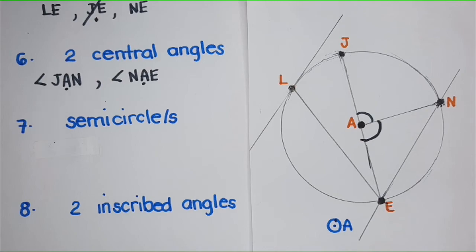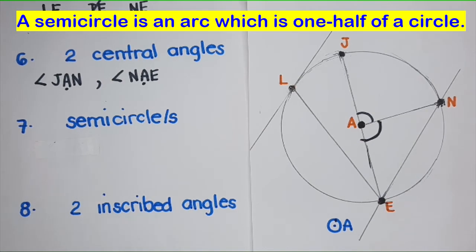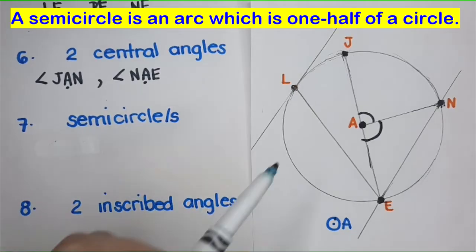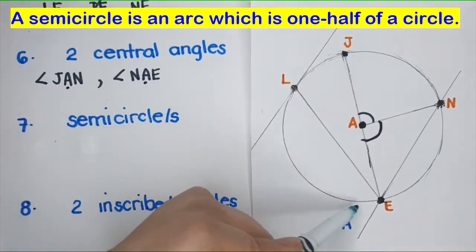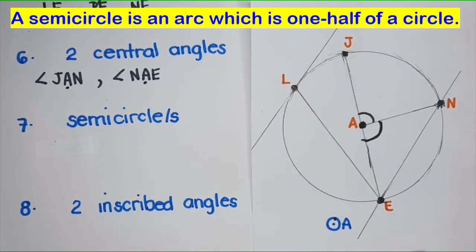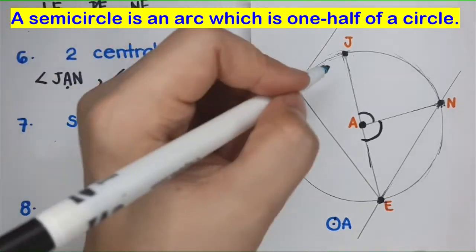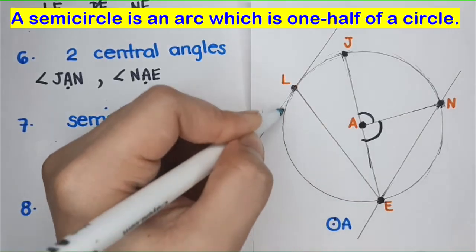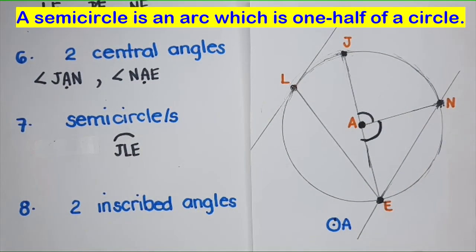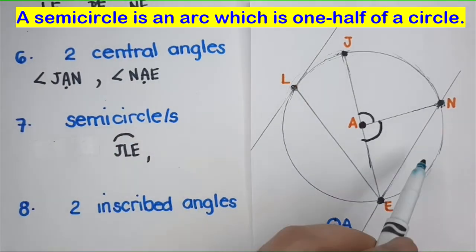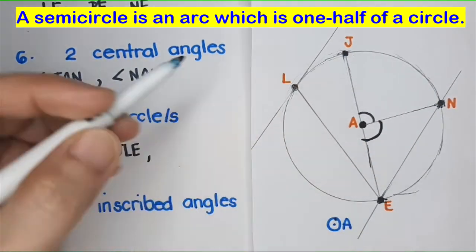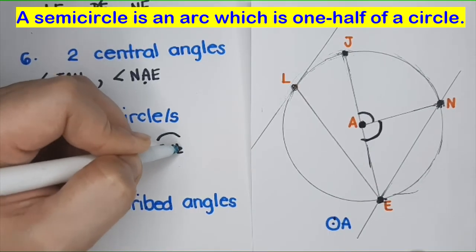Next, we have semicircles. A semicircle is an arc that is one half of a circle. It's advisable to use three letters to name a semicircle, because arc JE alone doesn't tell us which half. For example, arc JLE tells us exactly which semicircle. The other semicircle is arc JNE.